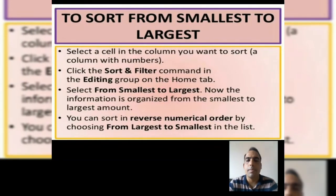Now I will explain how to sort from smallest to largest. First step, select a cell in the column you want to sort. Step 2, click the sort and filter command in the editing group on the home tab. Step 3, select from smallest to largest option. Now the information is organized from smallest to largest amount.